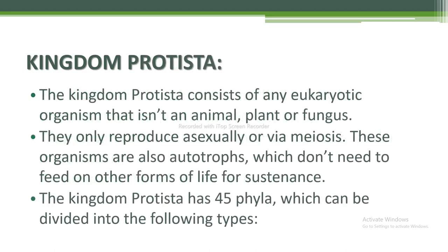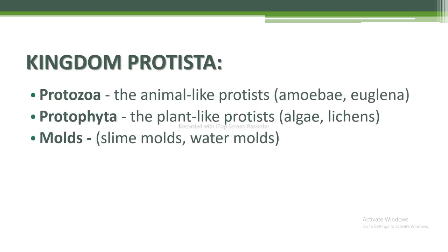Next is kingdom Protista. Kingdom Protista consists of eukaryotic organisms that are not animals, plants, or fungi. They reproduce asexually or via meiosis. These organisms are also autotrophs that don't need to feed on other forms of life for sustenance. Kingdom Protista has 45 phyla, divided into: Protozoa — animal-like protists, including amoebae and euglena; Protophyta — plant-like protists, for example algae and lichens; and Molds — for example slime molds and water molds.